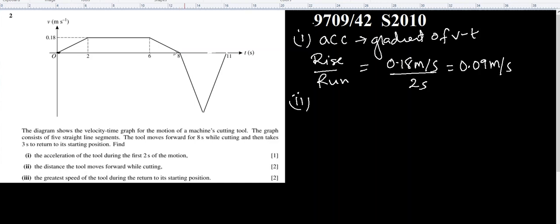We will find the area of the trapezium, this trapezium we can see here. Trapezium's area is what? First parallel line is this one, which is from 2 to 6, which is 4 seconds. Second parallel line is from 0 to 8 seconds, so this is 8 seconds. First parallel line is 4 seconds, second parallel line is 8 seconds, and the height is 0.18 meters per second.